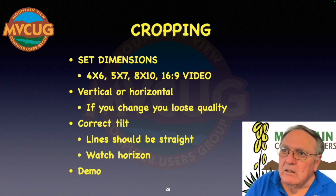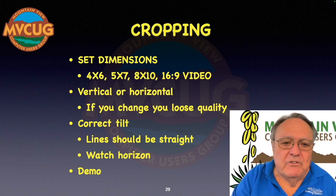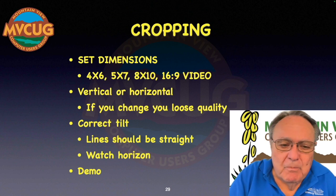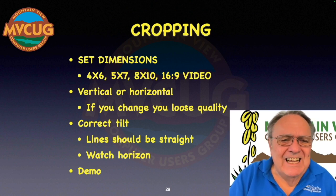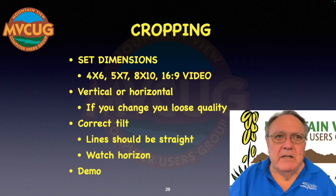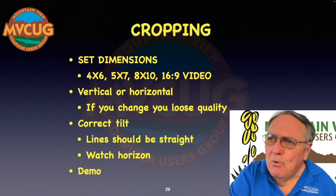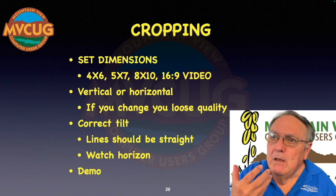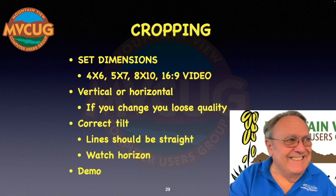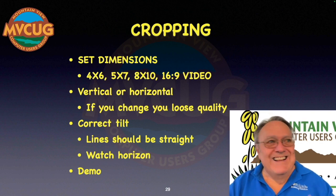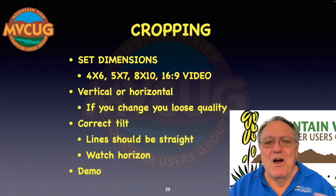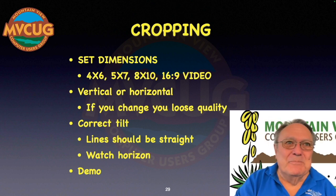Common photo sizes include 4x6, 5x7, 8x10, and 16x9 for video. People often ask why 8x10 is such an odd size. In the early days of photography, emulsion was placed on glass plates — and window panes came in two sizes: 8x10 and 5x7. So those became the standard sizes. Half of 5x7 is 3.5x5. Half of 8x10 is 4x5 — which is where the old 4x5 negatives came from.